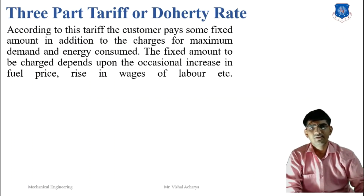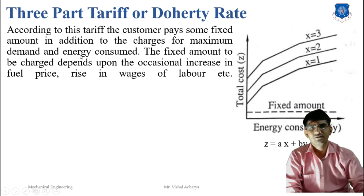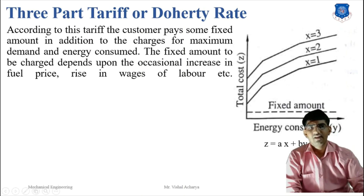Next is the three-part tariff of Doherty. According to this tariff, the consumer pays a fixed amount in addition to charges for maximum demand and energy consumed. The fixed amount charged depends upon occasional increases in fuel price and rises in the wages of labor. The equation is Z = AX + BY + C.